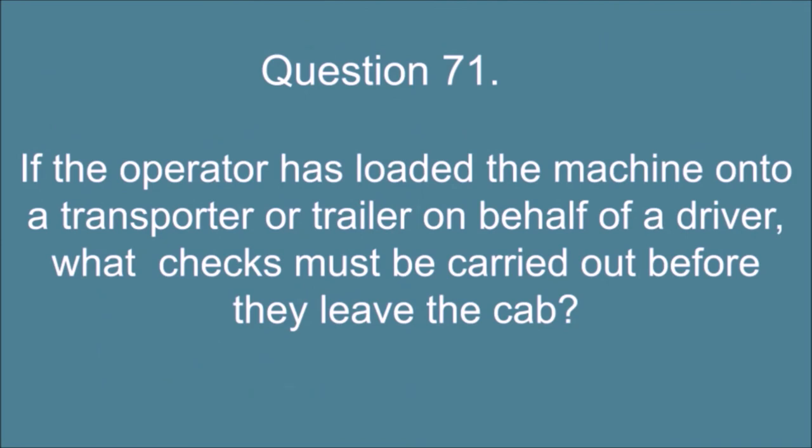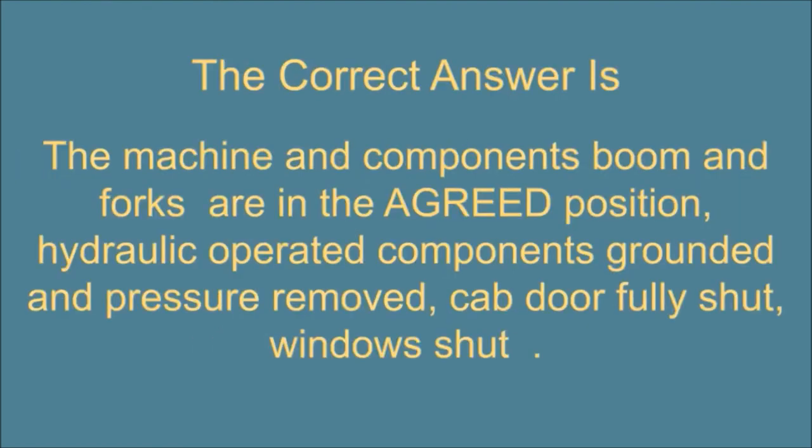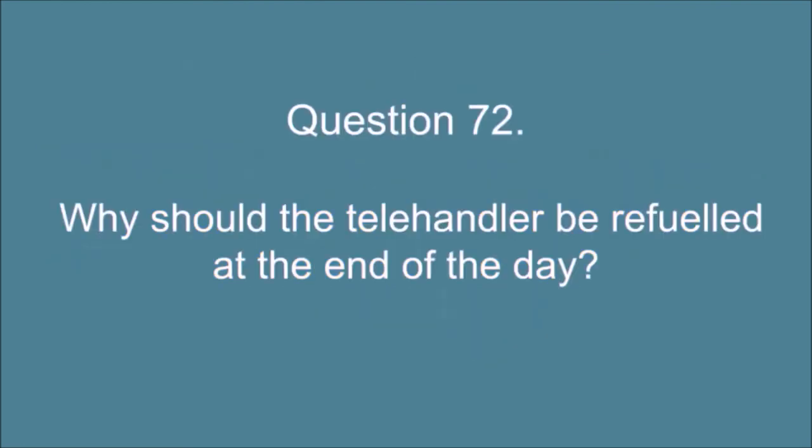Question 71. If the operator has loaded the machine onto a transporter or trailer on behalf of a driver, what checks must be carried out before they leave the cab? The correct answer is: The machine and components boom and forks are in the agreed position, hydraulic operated components grounded and pressure removed, cab door fully shut, windows shut.